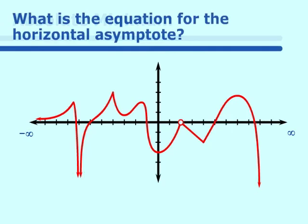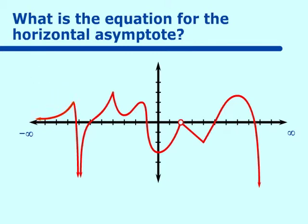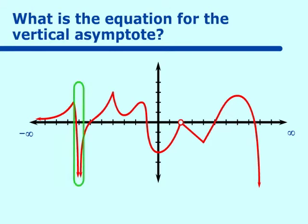What is the equation for the horizontal asymptote? We do have a horizontal asymptote: as x goes out towards negative infinity, y equals 0. What is the equation of the vertical asymptote? It is at x equals negative 7.